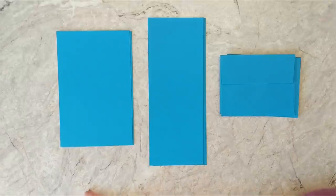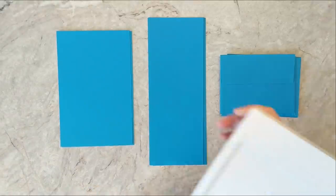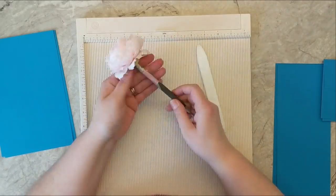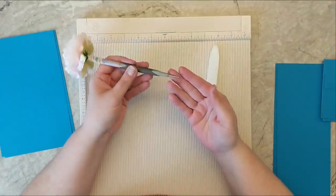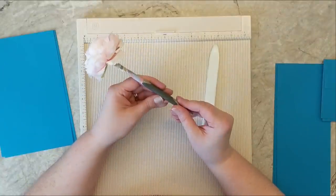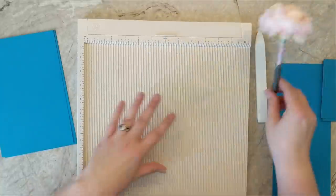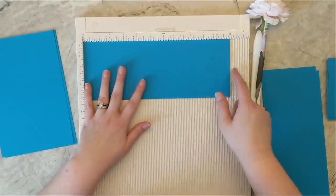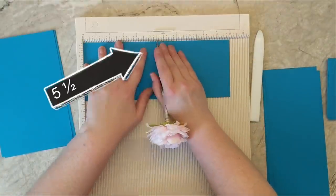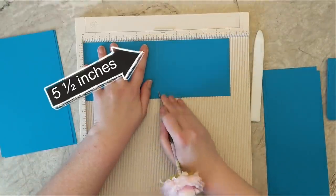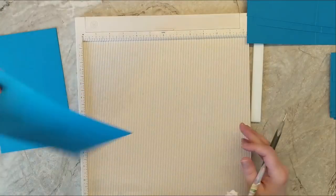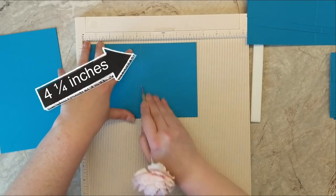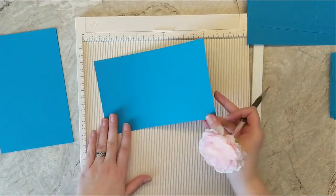When we score these, the cards will be the exact same size, just with a different orientation. I have a score tool and also a Teflon bone folder and I use each of these for two different purposes. I use my score tool to score on my scoreboard and the Teflon bone folder to crease the folds. I'm going to pop the 4.25 by 11 inch sheet into my scoreboard and score at 5.5 inches. Then for the 8.5 by 5.5 piece, I'm going to score at 4.25 across the 8.5 inch side.